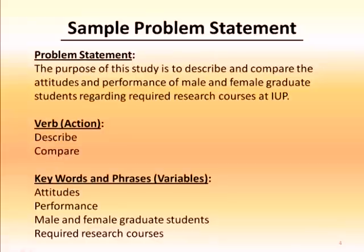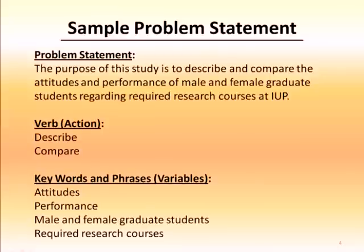Let's look at an example of a problem statement. The example is: 'The purpose of this study is to describe and compare the attitudes and performance of male and female graduate students regarding required research courses at IUP.' As you will note, there are two verbs in this problem statement — describe and compare — which implies that we intend to do both of these things in our research study. We're going to describe the attitudes and performance for both male and female graduate students, and then compare these two things between male and female graduate students.